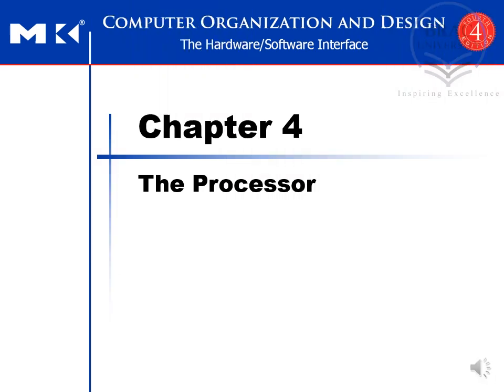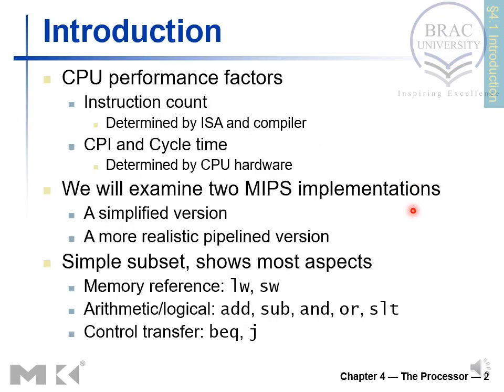In Chapter 4, we'll discuss the processor. Inside the processor we have datapaths, so we'll see how datapaths are organized, how components are connected, how data communication takes place, and how the control unit plays a vital role in controlling the components inside the datapath. We'll see two types of datapaths: a simpler version and a more realistic version, along with the benefits and issues of both.